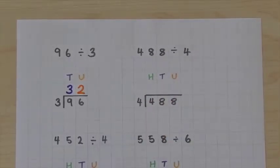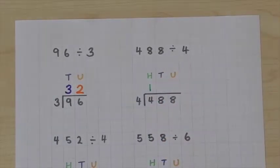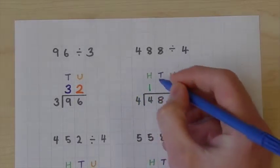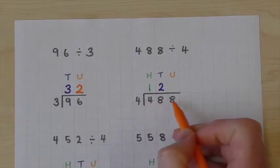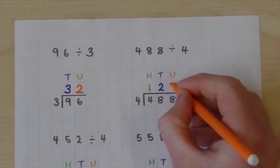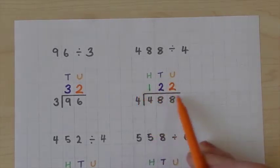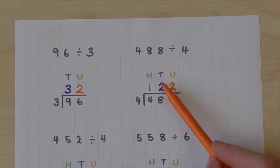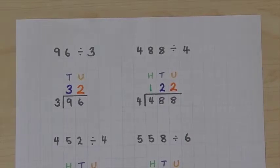Again, starting on the left hand side: 4 goes into 4 once exactly. Moving on to our tens, 4 goes into 8 twice exactly. Moving on to our units, 4 goes into 8 two times exactly. And that gives us our answer: 122. Again, we can check by multiplying 122 by 4, which gives us 488.